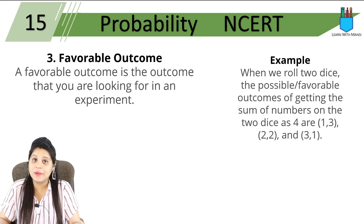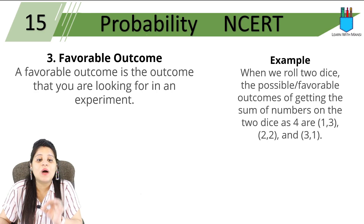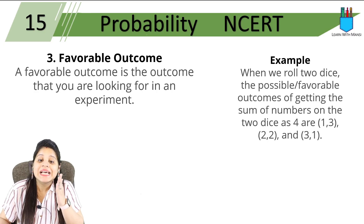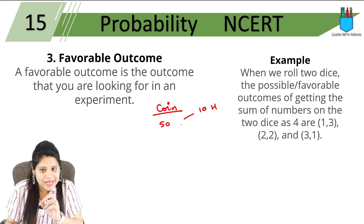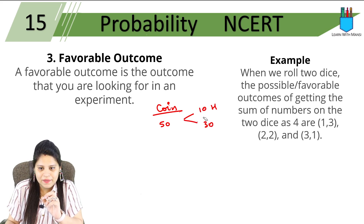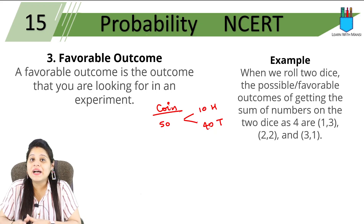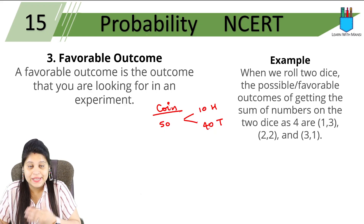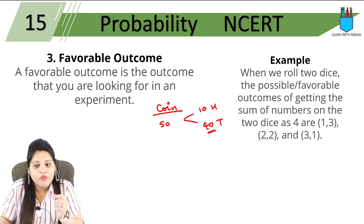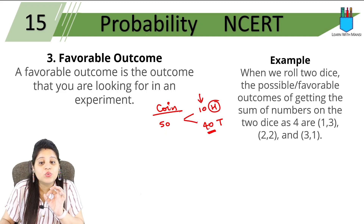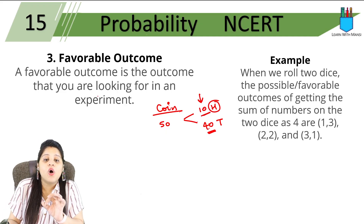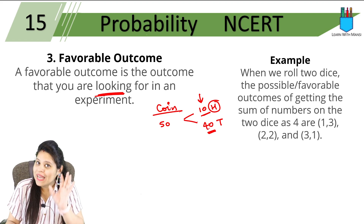What is a favorable outcome? This is also in the formula. A favorable outcome is the outcome that you are looking for in an experiment. For example: you tossed a coin 50 times. It came up heads 10 times and tails 40 times. If I want to find the probability of tails, what is my favorable outcome? It's 40, because out of 50 tosses there were 40 tails. If instead I wanted heads, the favorable outcome would be 10. So it depends on what you are looking for in the experiment.